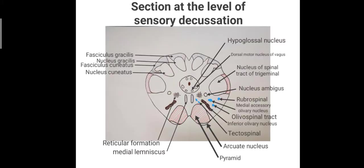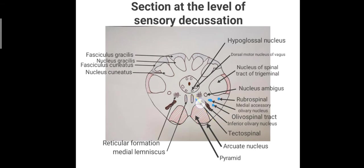The section at the level of sensory decussation includes the hypoglossal nucleus, the dorsal motor nucleus of vagus, the nucleus of the spinal tract of trigeminal nerve, nucleus ambiguus, rubrospinal and olivospinal tracts, the tectospinal tract, the pyramids, the fasciculus gracilis and nucleus gracilis, and the nucleus cuneatus and fasciculus cuneatus. These are the structures to remember from the section at the level of sensory decussation.